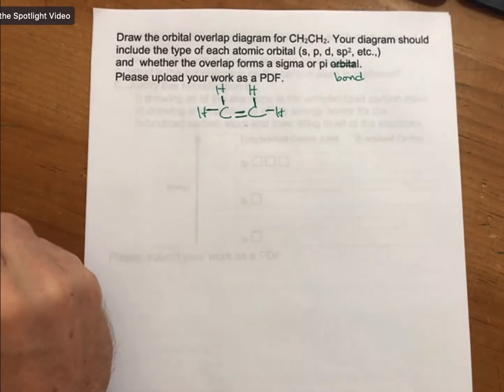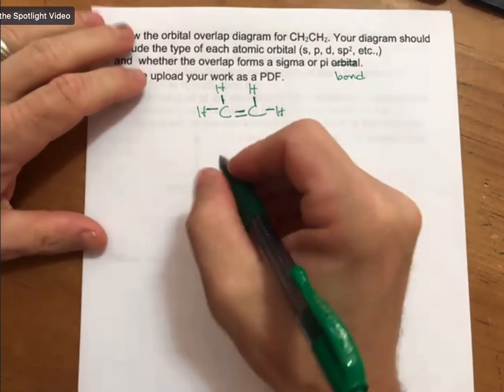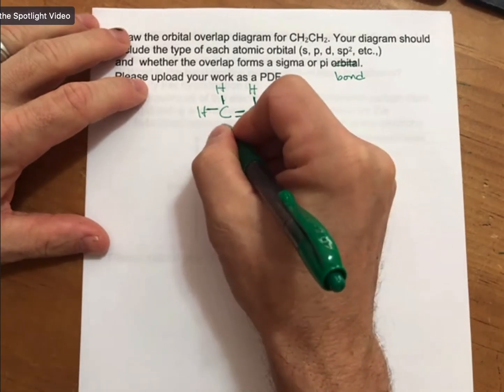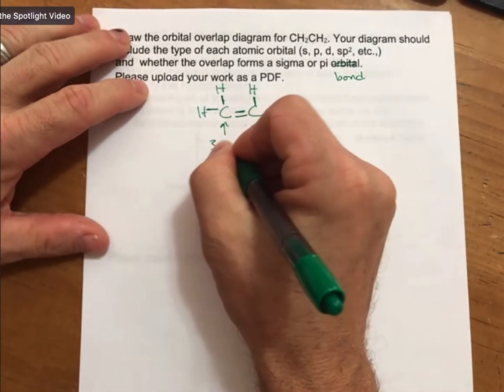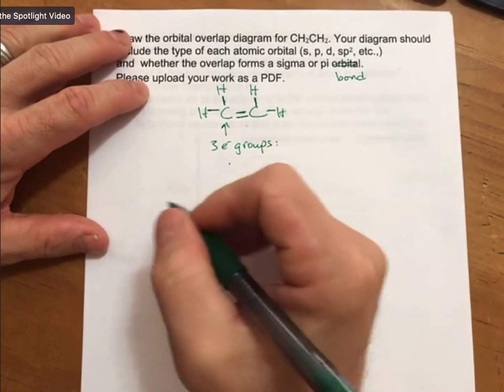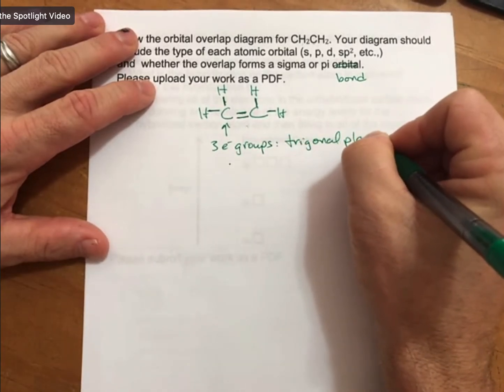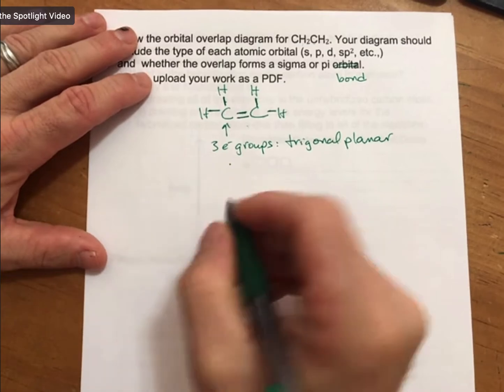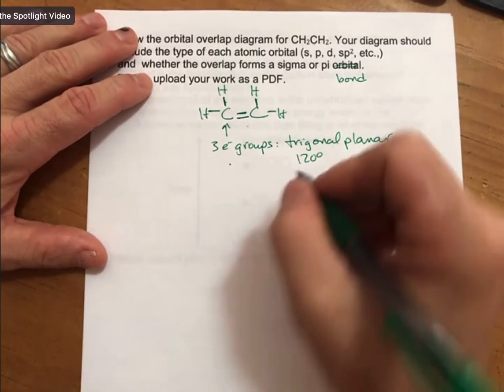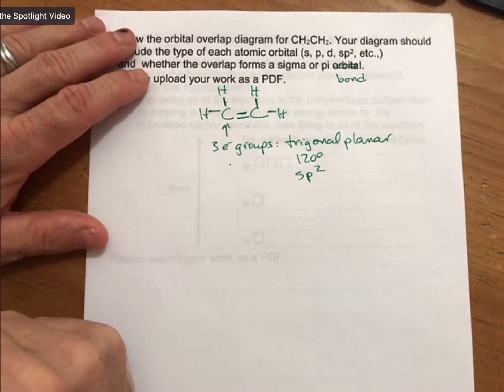Okay, now we're going to do our orbital overlap diagram. So if I look at this carbon and I look around it, there are 1, 2, 3 electron groups. And for 3 electron groups, the electron geometry is trigonal planar, and we could also say the bond angle is 120 degrees, and the hybridization is sp2. And the hybridization is really what we need for this, although it's nice to have the bond angle as well.